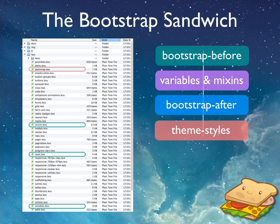Say for instance an update comes out — you'd then have to go through and take out your code and apply those changes and it can get really messy. Whereas through this way, you just replace the Bootstrap files, recompile, and it's updated with all your stuff still intact.